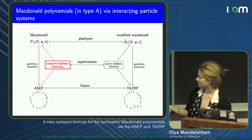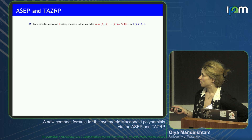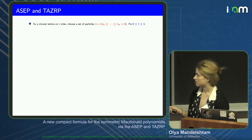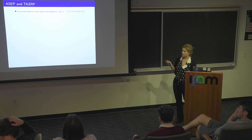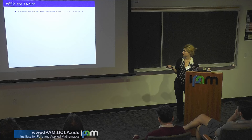Both the ASEP and the TASRP are one-dimensional particle processes on a circular lattice. N is the number of sites, and lambda is a partition representing the types of particles on the lattice. These particle types are called species, and by convention the larger species are stronger. We also fix a parameter T between zero and one.